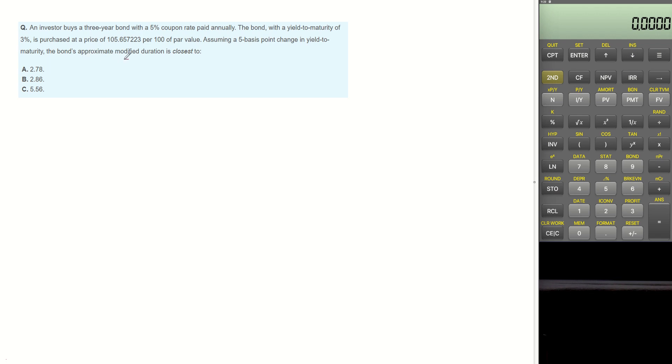The question is asking for bond modified duration, which means bond price change given rate change. Modified duration can be calculated by: bond price when yield is decreased, minus price when yield is increased, divided by 2 multiplied by original bond price multiplied by yield change.